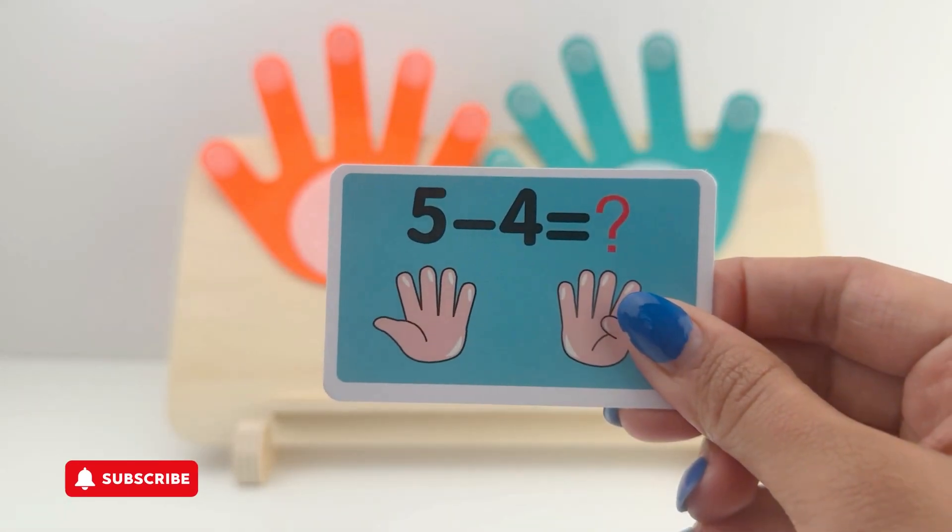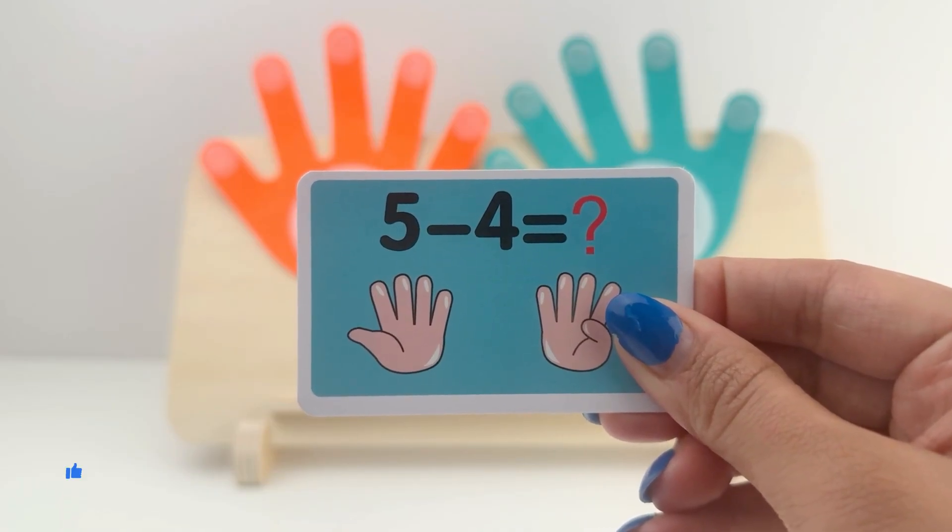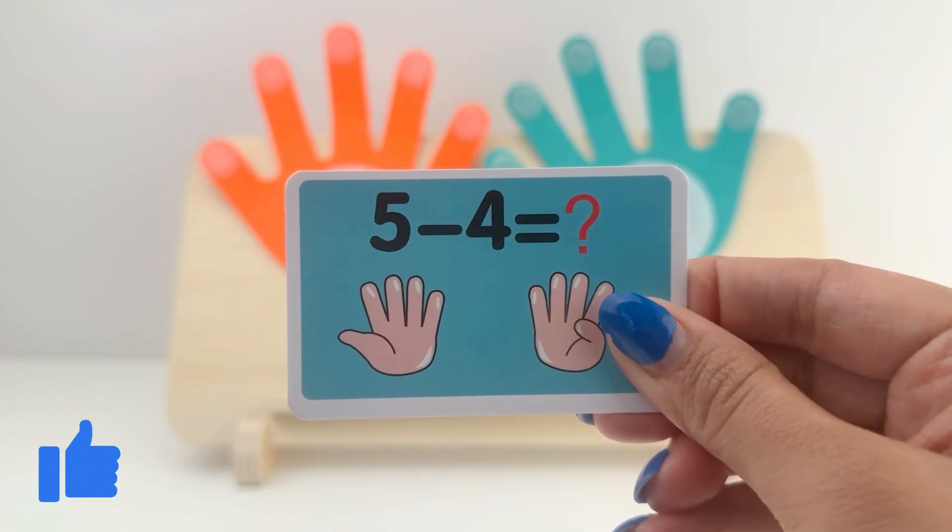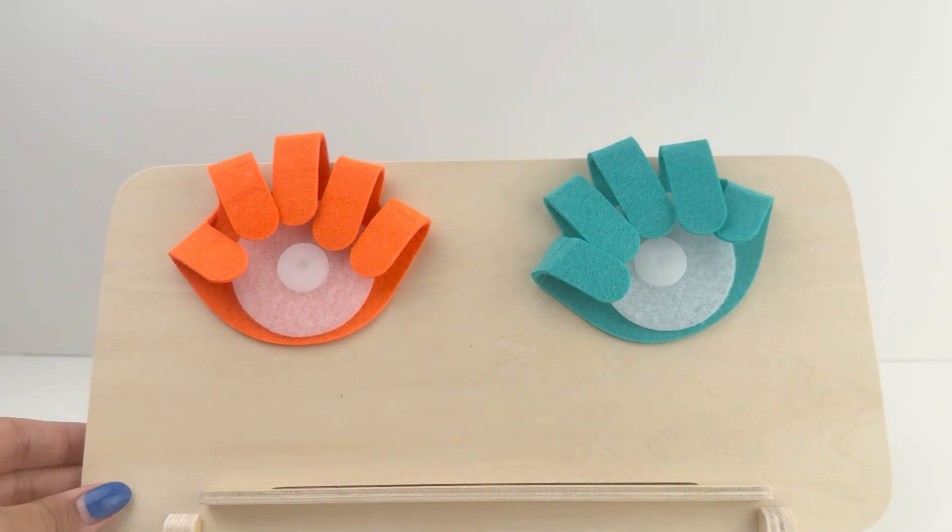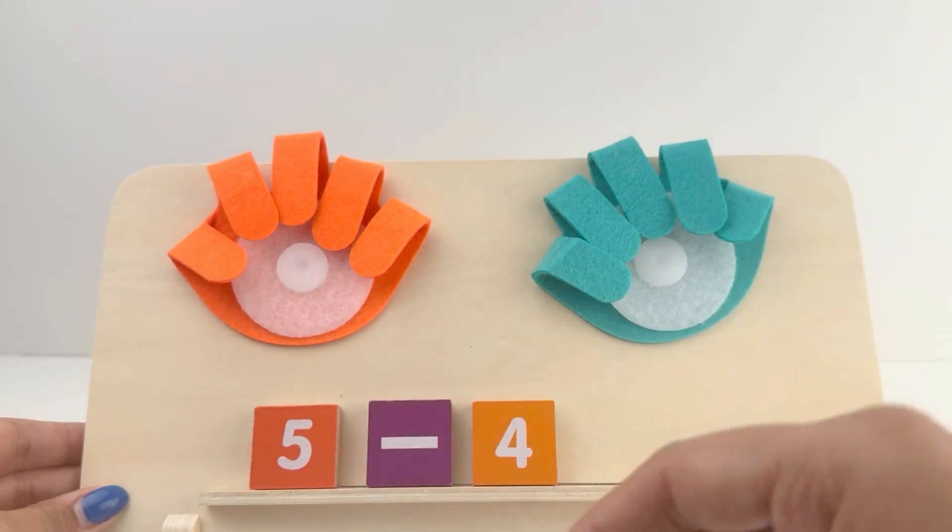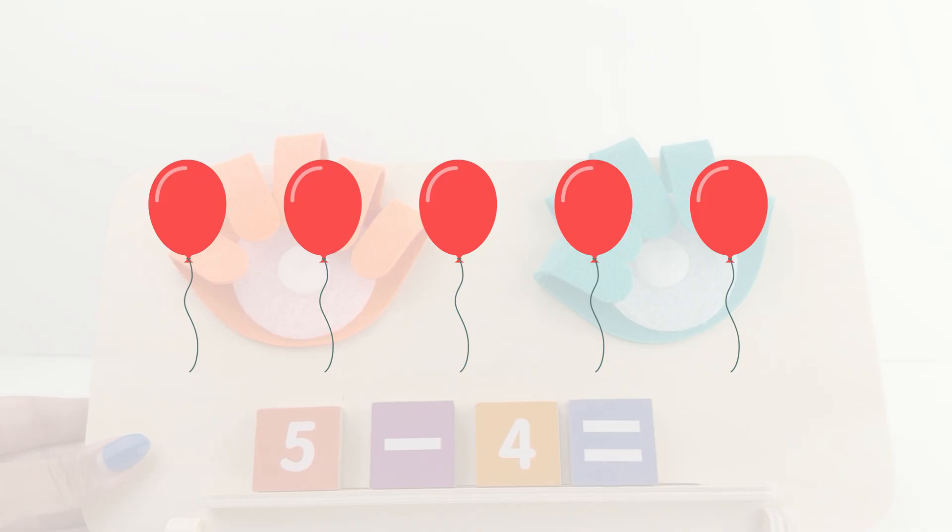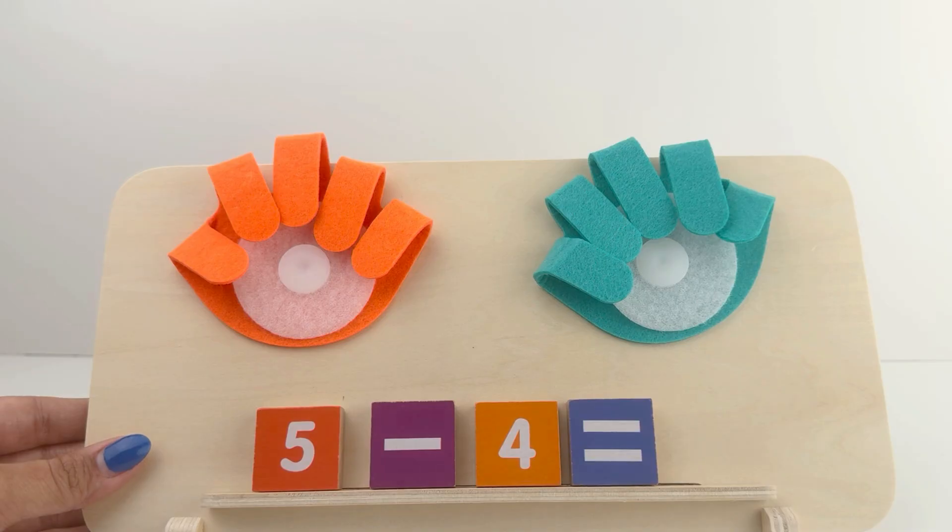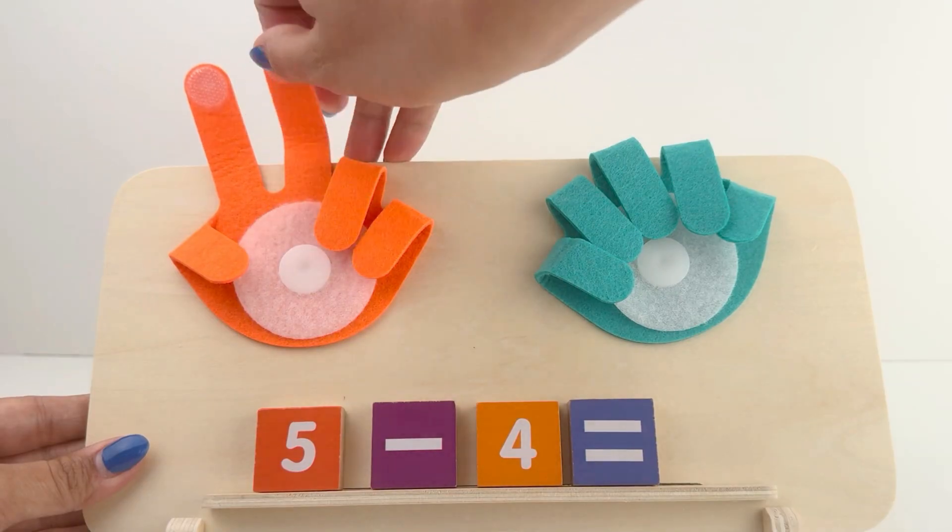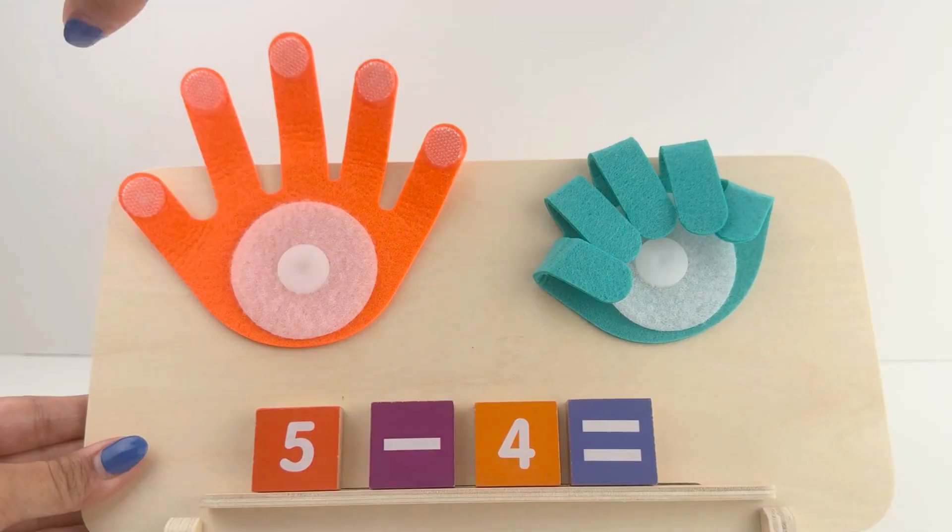Now, for this card, I want you all to do it on your own hands. 5 minus 4. Let's do it. I'm going to place the blocks on my board. 5 minus 4 equals. Let's find out together. Let's imagine you have 5 balloons. Let's open 5 fingers on your left hand. 1, 2, 3, 4, and 5.